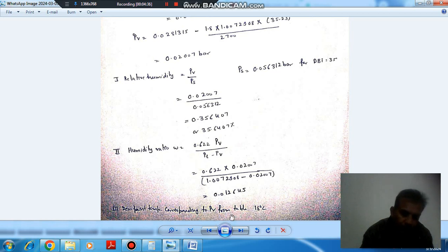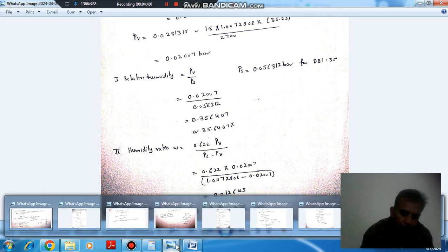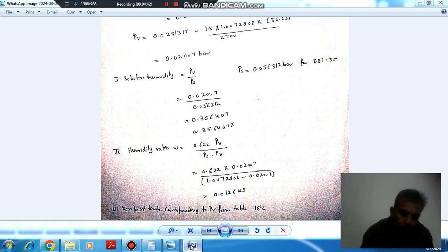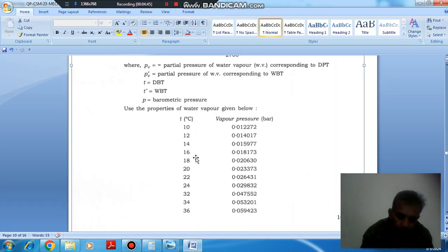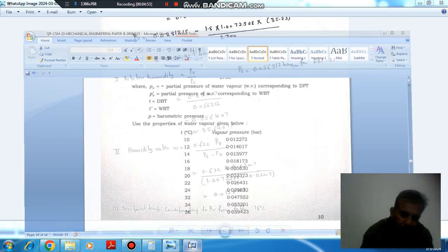Now, dew point temperature. Dew point temperature corresponding to P_V is 0.027, so it will be approximately 22.16 degrees Celsius.